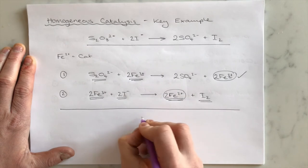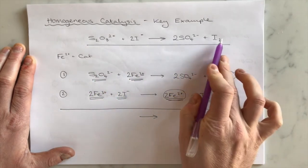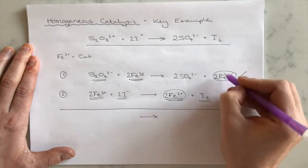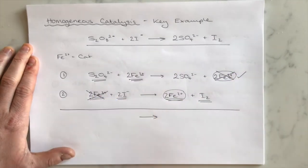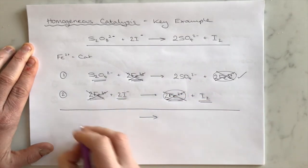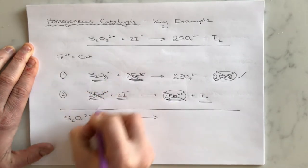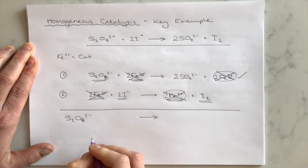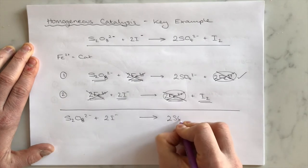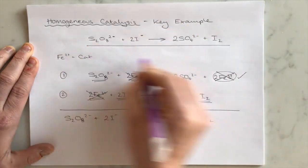When we add up everything on the left-hand side of both steps and everything on the right-hand side, we get our overall reaction. We can cancel anything which features on both sides: the Fe³⁺ and Fe²⁺ intermediates cancel out. So we're left with S₂O₈²⁻ reacting with two iodide ions to make two SO₄²⁻ and iodine — which is the overall reaction we were looking for.